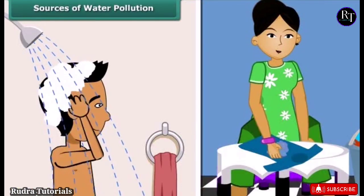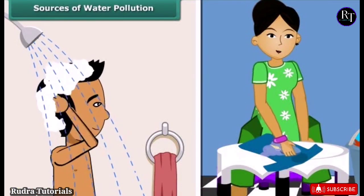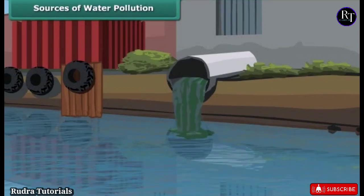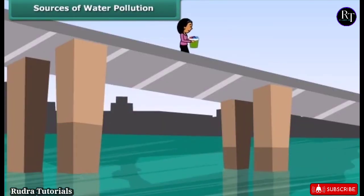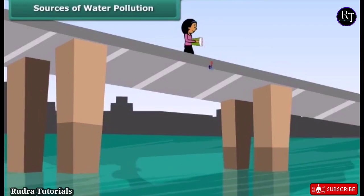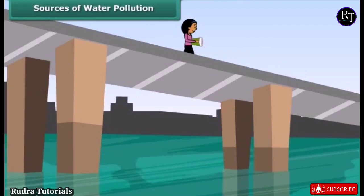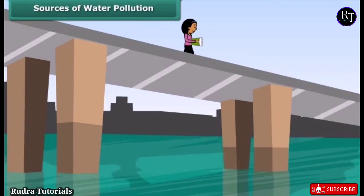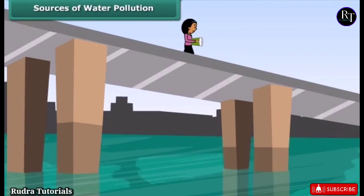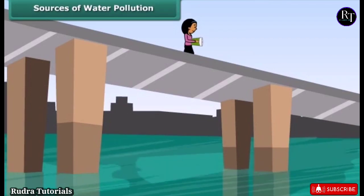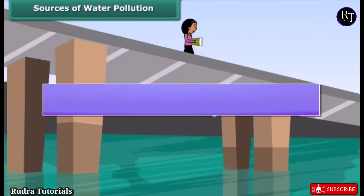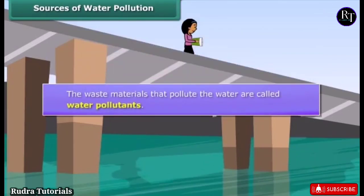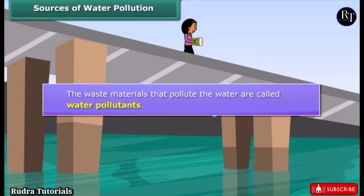Also, people bathe, wash clothes and defecate in rivers and ponds. They also throw garbage, flowers and non-biodegradable polythene bags into the river. Many rivers have become dead due to high levels of pollution and aquatic life cannot survive in them. The waste materials that pollute the water are called water pollutants.